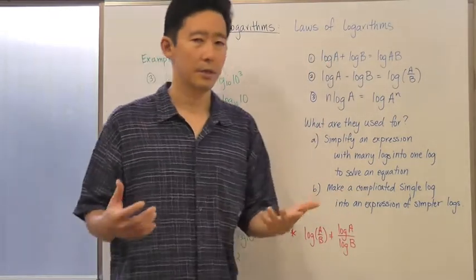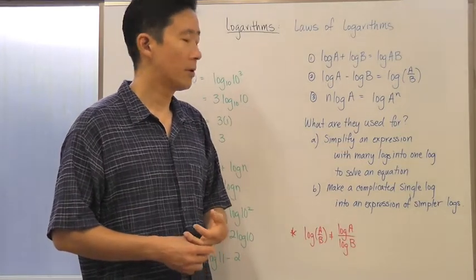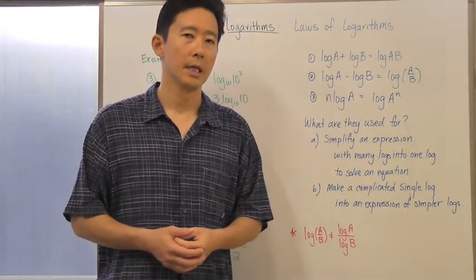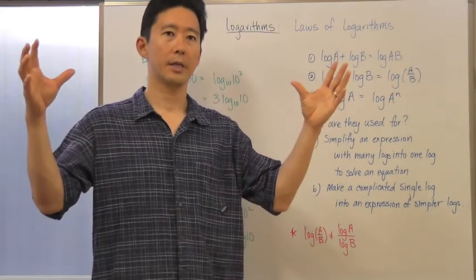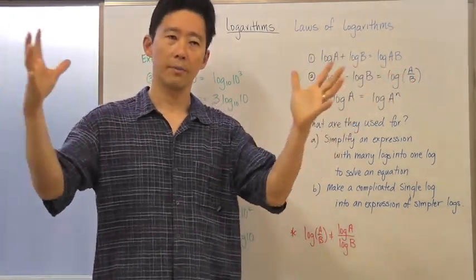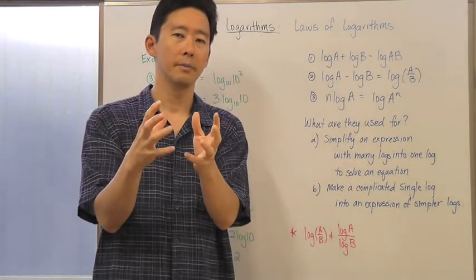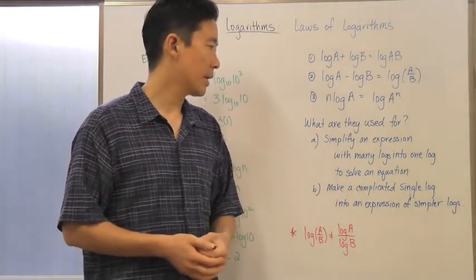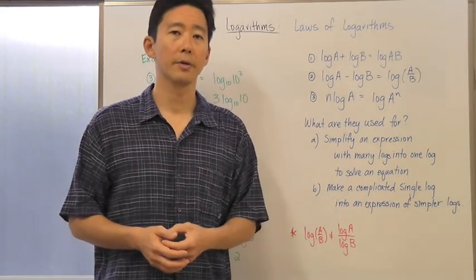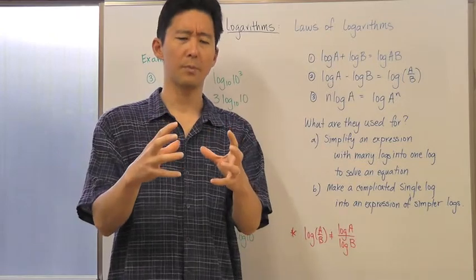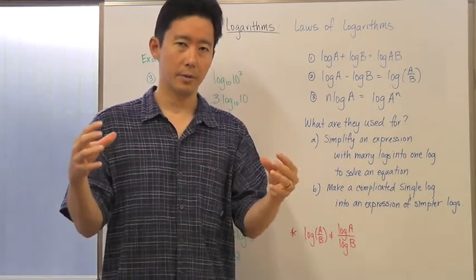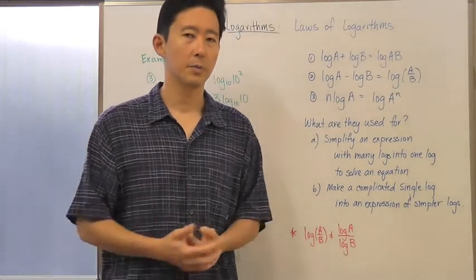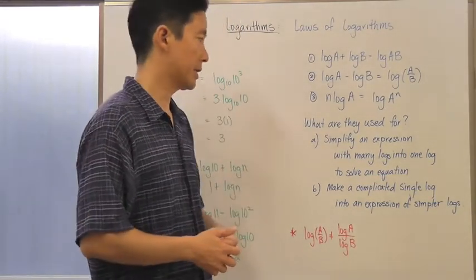What are these three laws of logarithms used for? There are basically two things. One is to simplify an expression of many logs into one log to solve an equation — if you have multiple logarithms you can combine them into a single logarithm and solve. The other is to take a complicated single log and expand it into an expression of simpler logarithms, which has advantages we'll see as we look at problems.